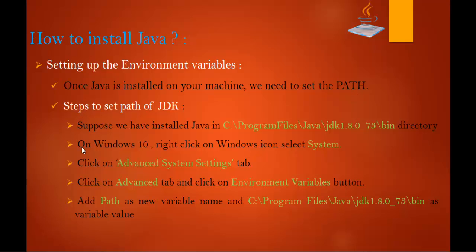Here are the steps to set the path of Java: first, click on the Windows system icon, then click on Advanced System Settings, then click the Advanced tab, and click on Environment Variables. Then we have to add a new variable with the name 'path' and add the file path where Java is installed as its value.